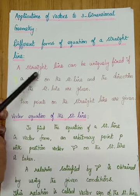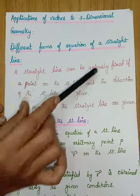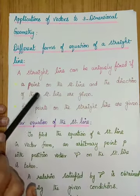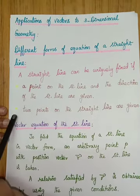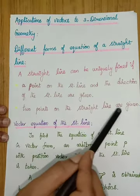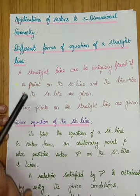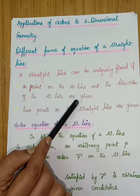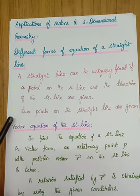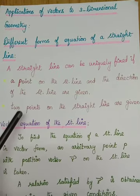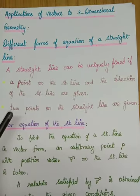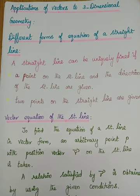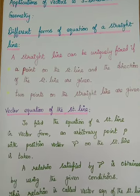A straight line can be determined if a point on the straight line and the direction of the straight line are given, or if two points on the straight line are given. So, if one point and one parallel vector are given, or two passing points are given, you can write the equation of the straight line.